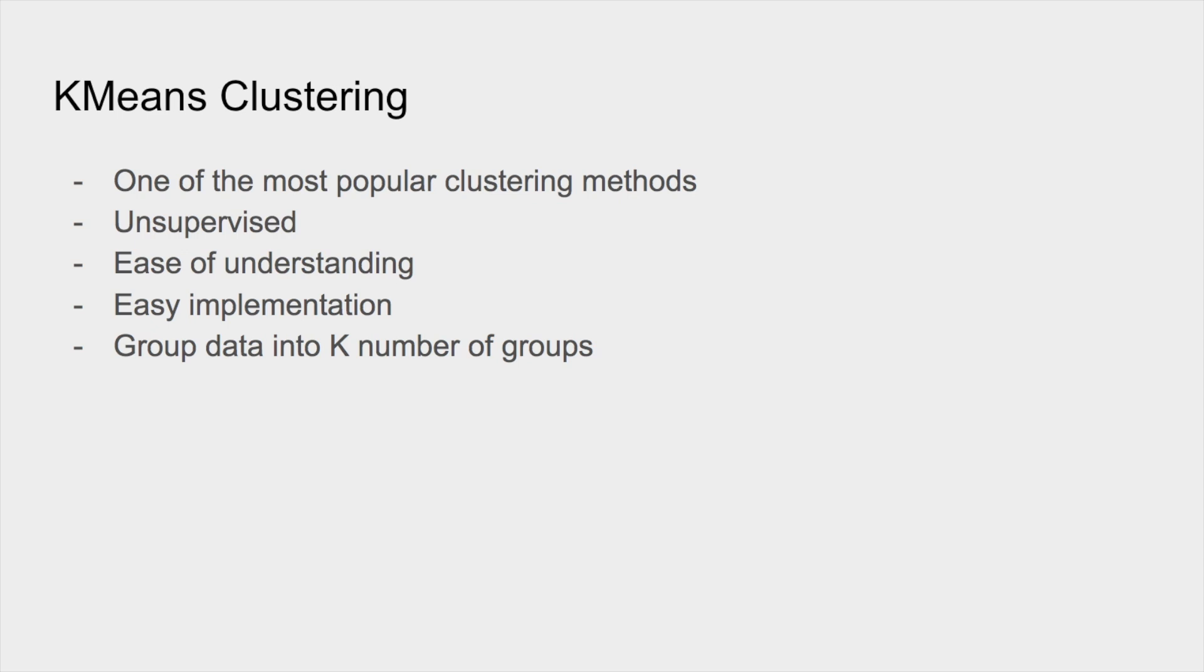The k just means that we're grouping the data into k number of groups. So in k-means clustering, we set the k number of groups and we're going to group the data into that many clusters.